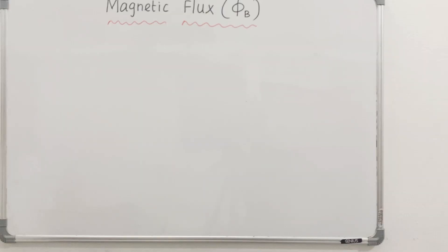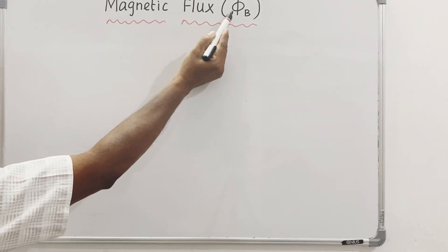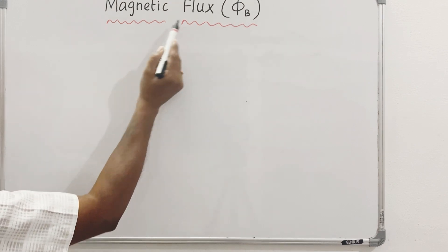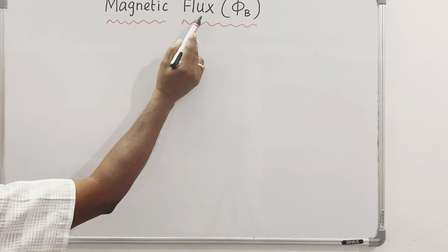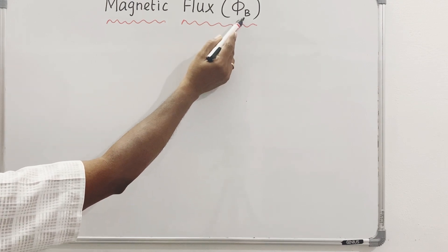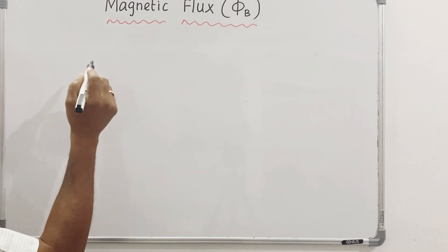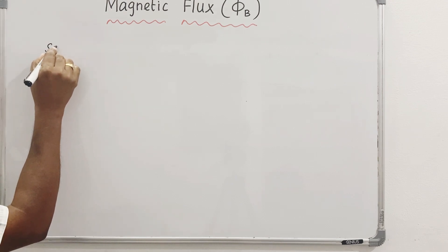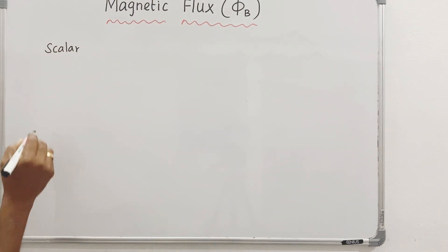The next topic is magnetic flux. Why do we call it phi? It's a suffix of B. In the first lesson on electrostatic and electric flux, it's phi-E. For magnetic flux, it's phi-B. Magnetic flux is a scalar quantity.